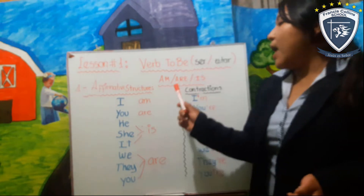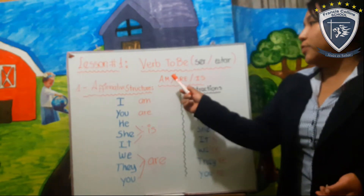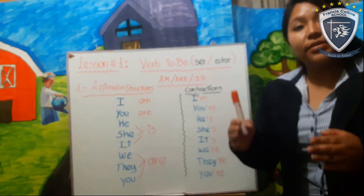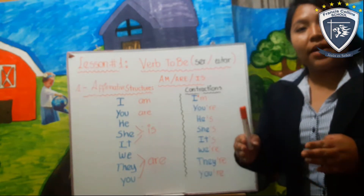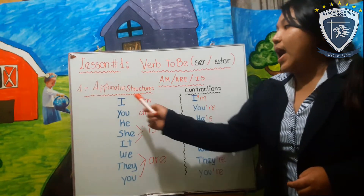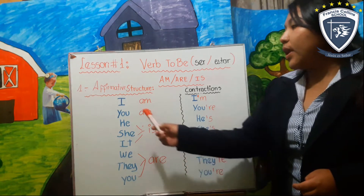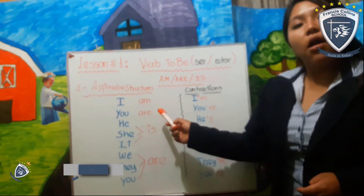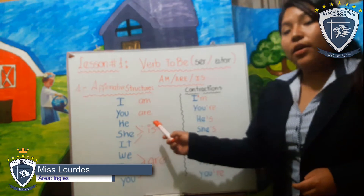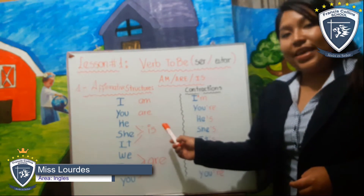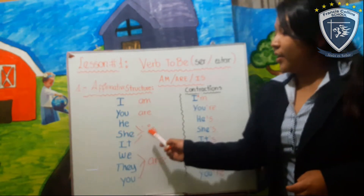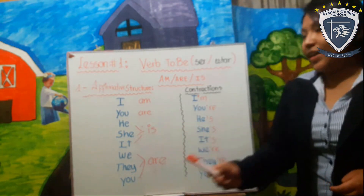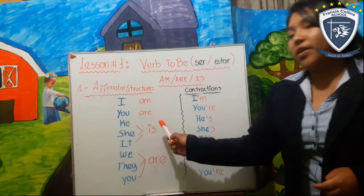Ahora, ¿con cuál de los verbos to be trabaja cada uno de ellos? El I siempre va a trabajar con el am: I am. You va a trabajar con el are. He, she, it trabajan con el is: He is, She is, It is.